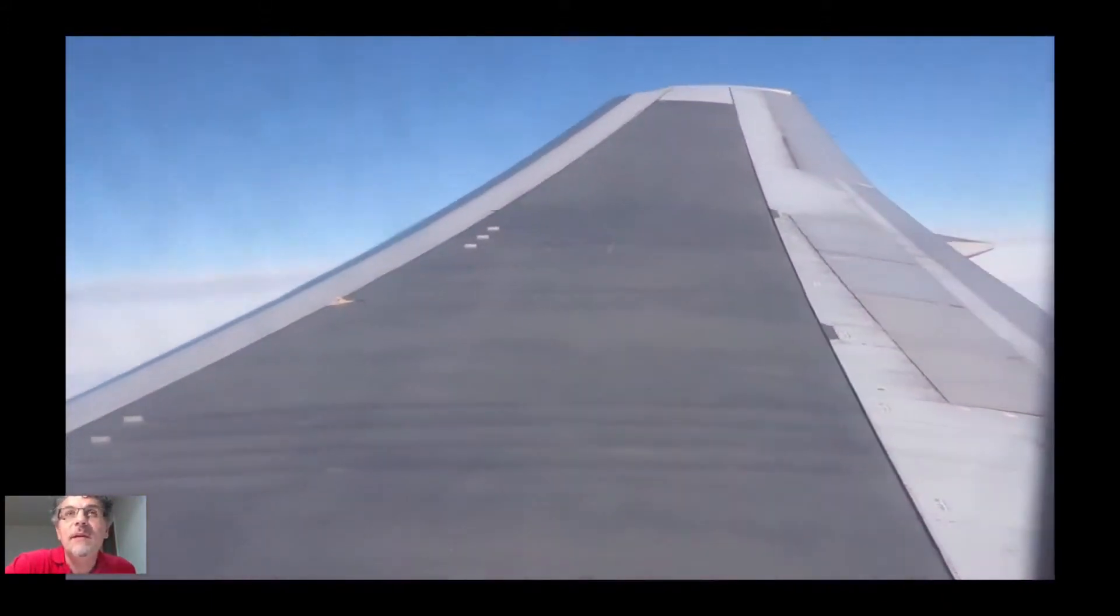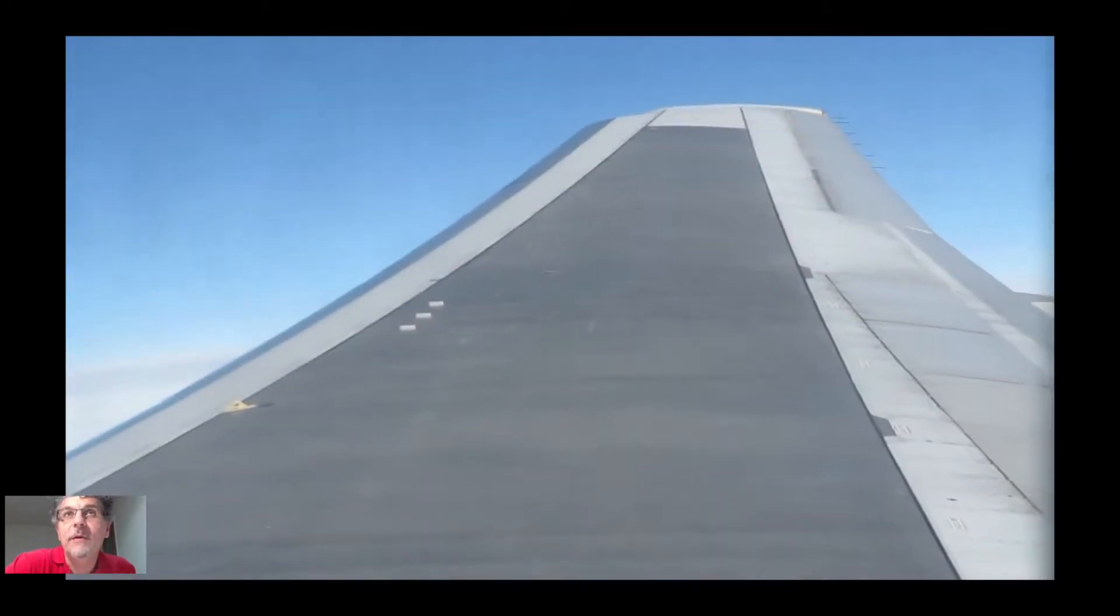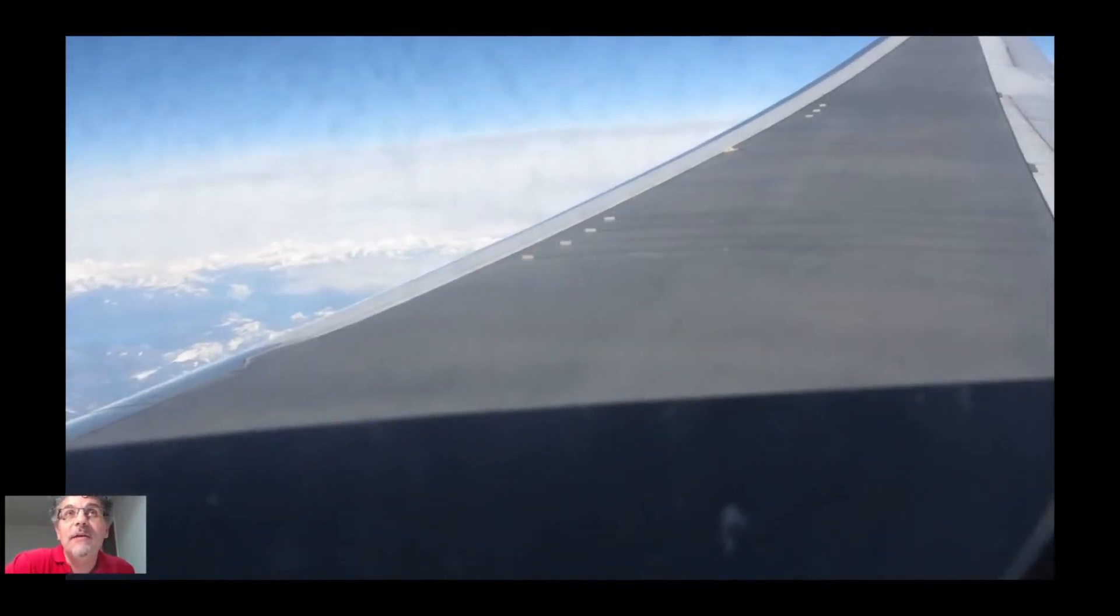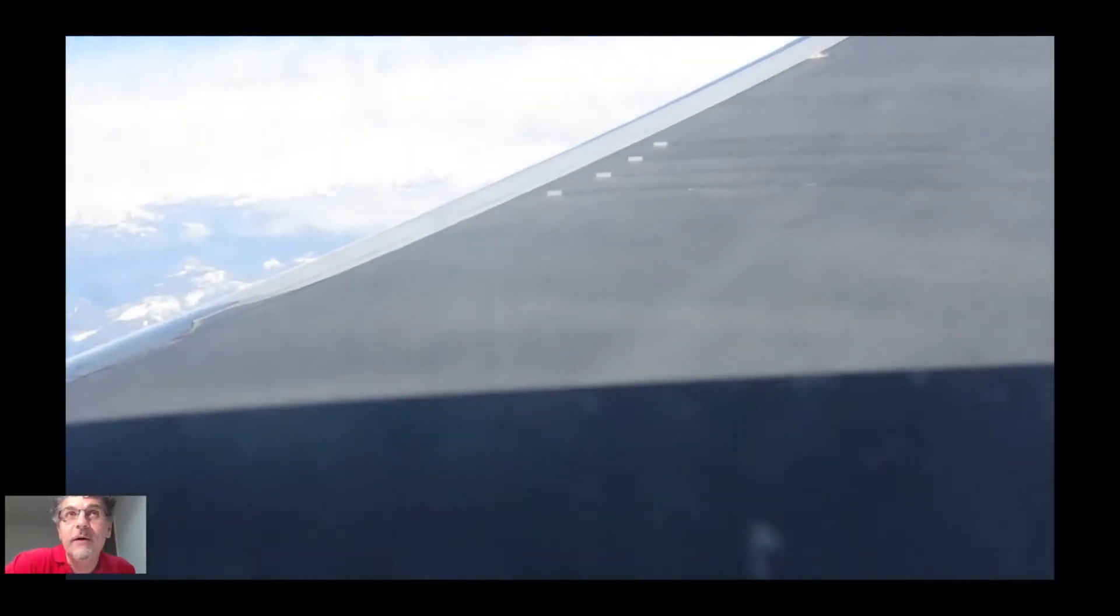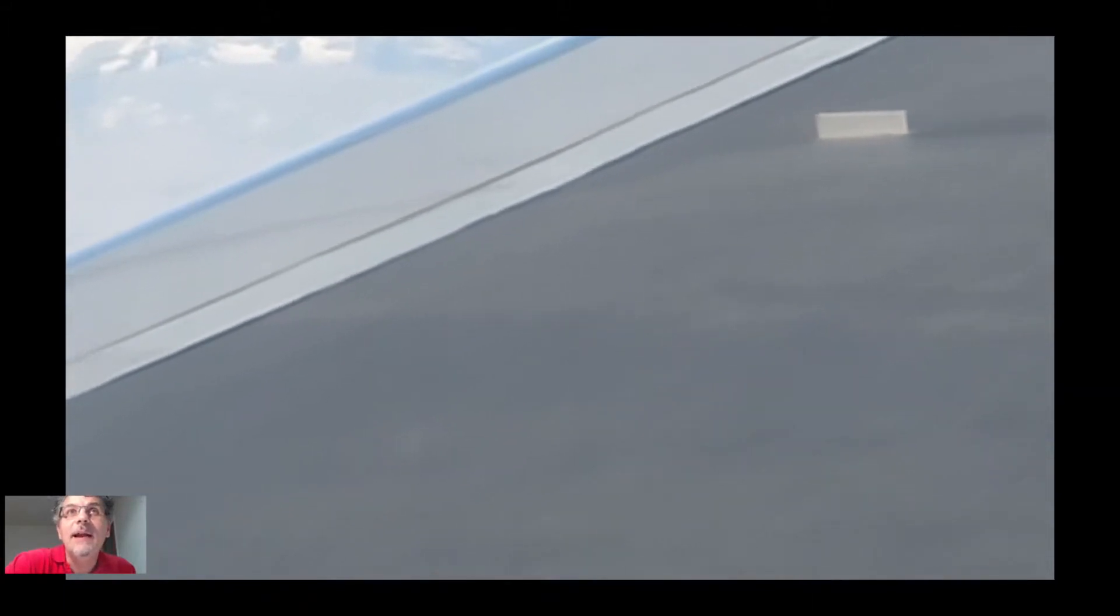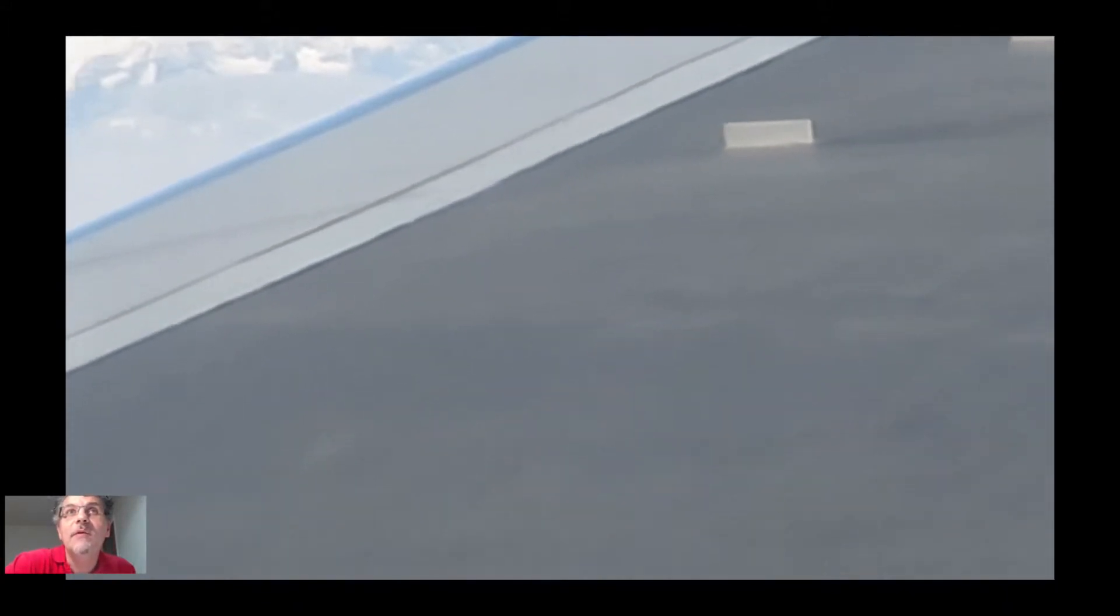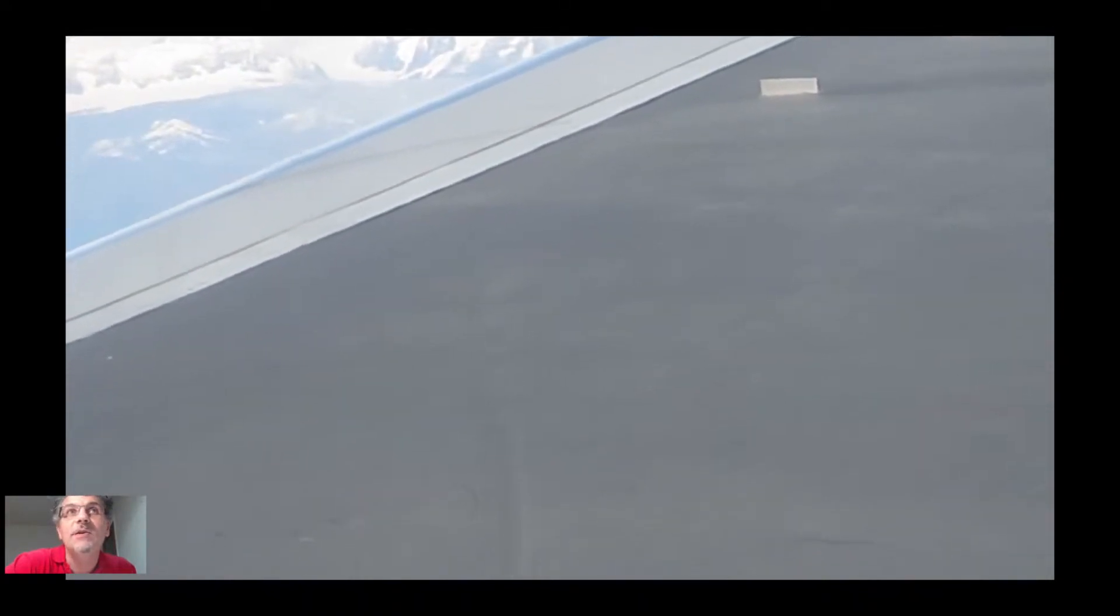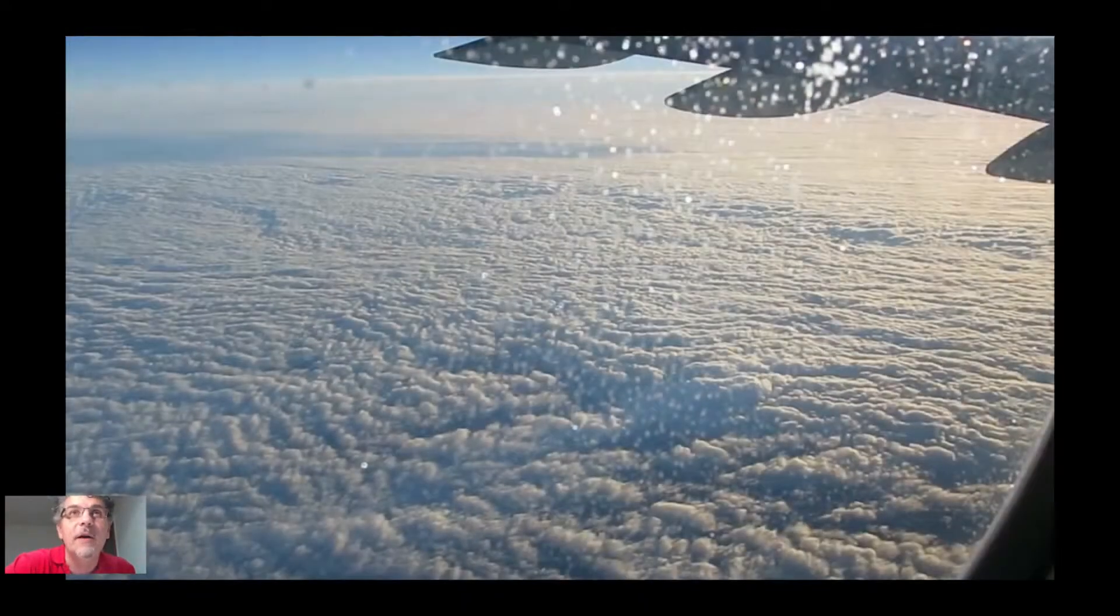This is a Boeing 767 on a flight between Calgary and Narita Airport, Tokyo, Japan. You can see here visualization, which is quite rare. There's a shock wave that you can visualize through the optical technique called shadowgraph. The angle of the sun was such that you could visualize the shock above the wing. There you can see the shock moving back and forth due to the changing inlet flow on the wing due to turbulence. The shock wave is not stationary; it moves back and forth in response to that.